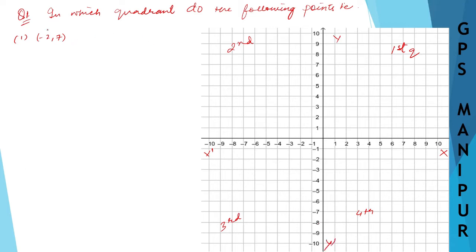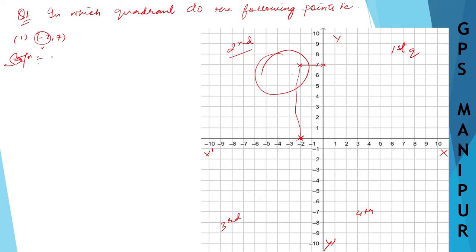Roman number 1 is the point (-2, 7). Minus 2 is the x-coordinate, so x is minus 2, which is here on the negative x side. And 7 is for y, so 7 is positive, it is here. Combining these two lines, this point lies in the second quadrant.